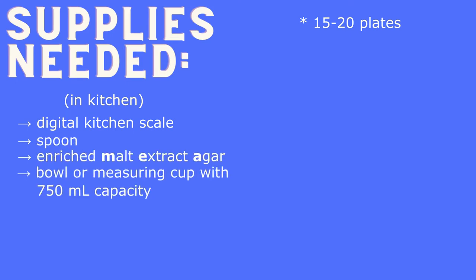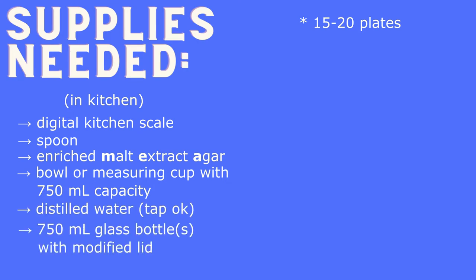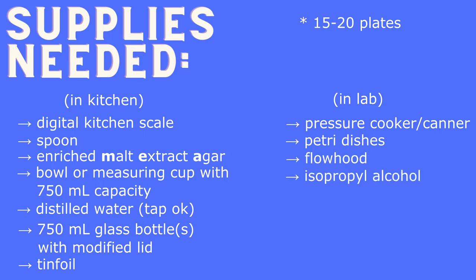You will need a digital kitchen scale, a spoon, enriched malt extract agar, easy to pour bowl or measuring cup, distilled water or tap is okay, 750 milliliter glass bottle with modified lid for gas exchange, tin foil, pressure cooker, petri dishes, flow hood, isopropyl alcohol, paper towels, parafilm, and scissors.